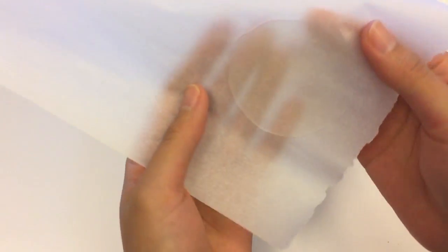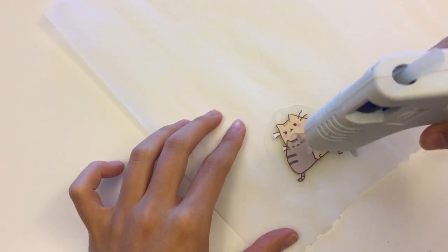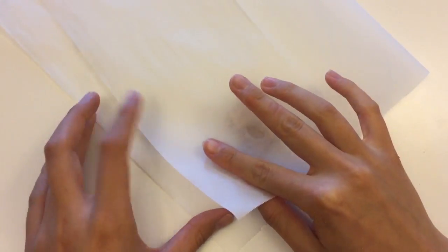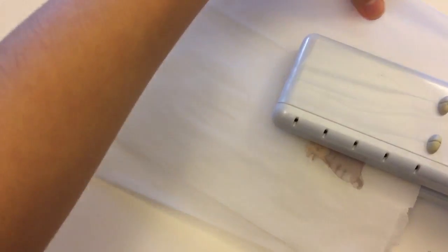Wait until it's completely cool to peel off the parchment paper. Then just place some more hot glue on top and repeat the process. Make sure you place enough hot glue that it covers the entire picture that you have there.